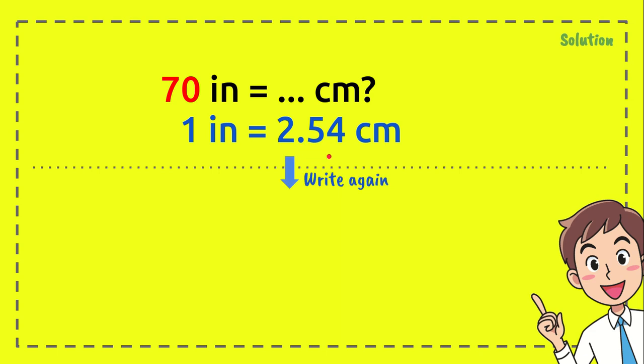And now this is a very important step: just write again the formula from there to here, and we have 70 from the question. We need to put here 70 and multiply it with this number.